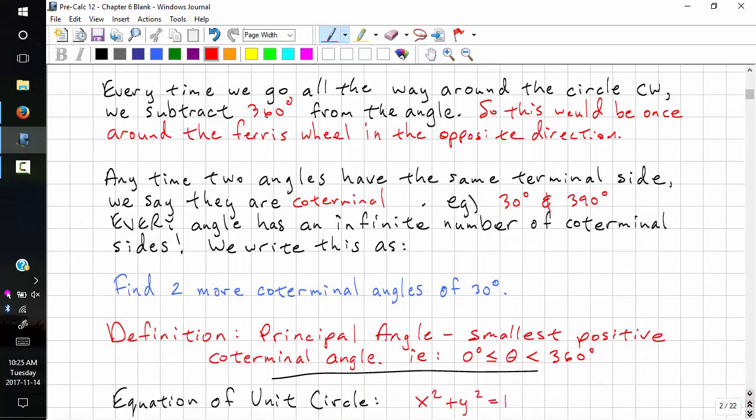Every angle has an infinite number of coterminal sides. We can write this as an expression: 30 degrees plus 360 degrees times n, n element z. This is the set of integers.